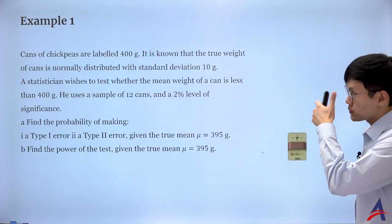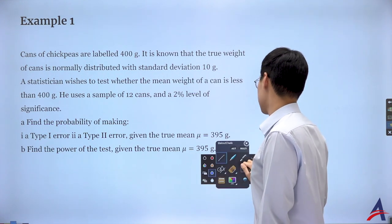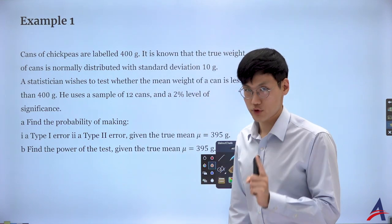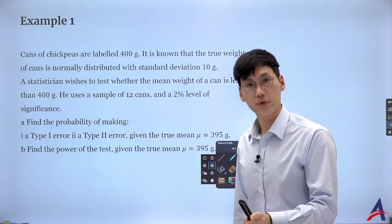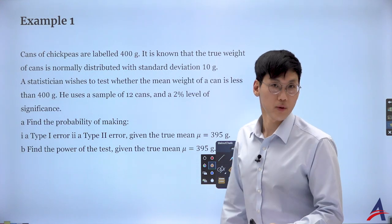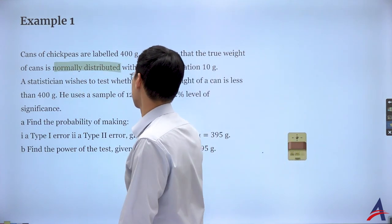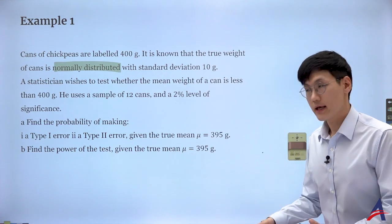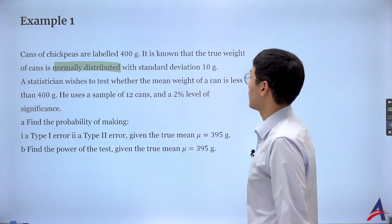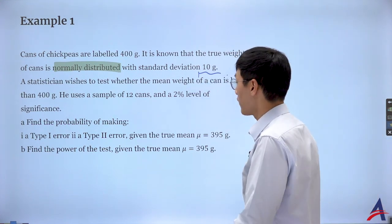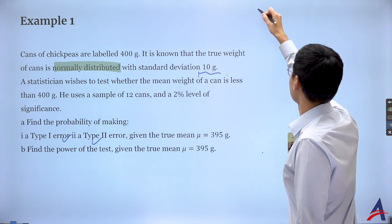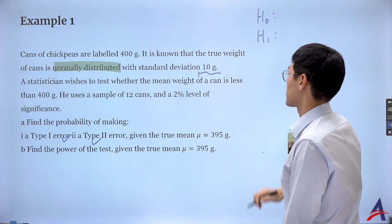Let's read this example carefully. What's very important is whether I'm given the distribution, because for hypothesis testing that's often crucial. I'm very happy with this first example because it tells me the normal distribution, so I know I'll be working with mu or sigma. And I'm given the standard deviation, so it's going to involve type 1 or type 2 error.